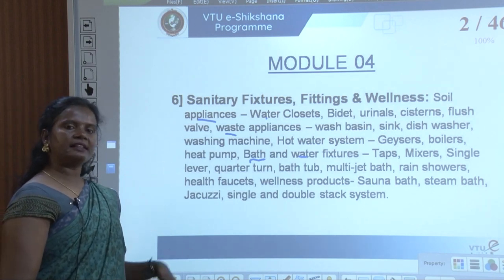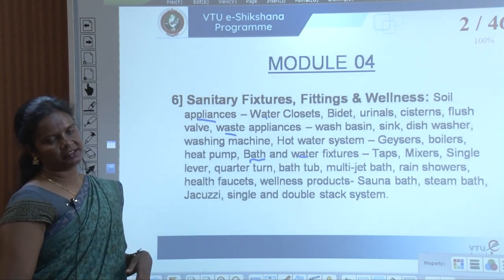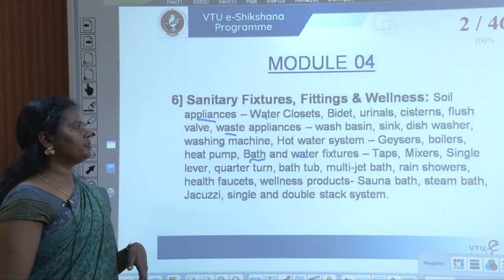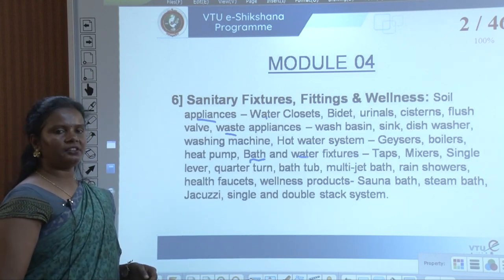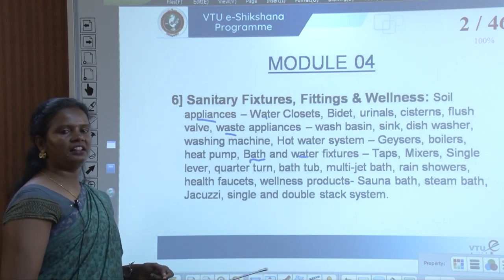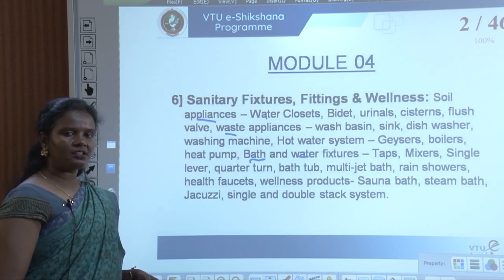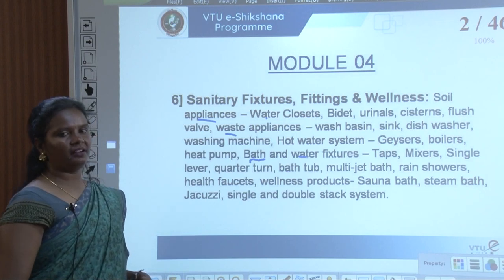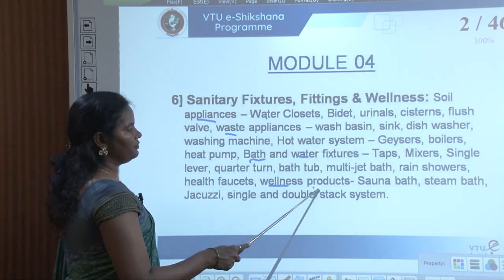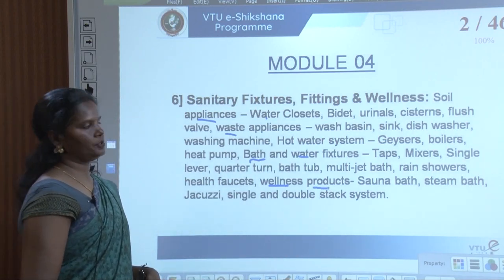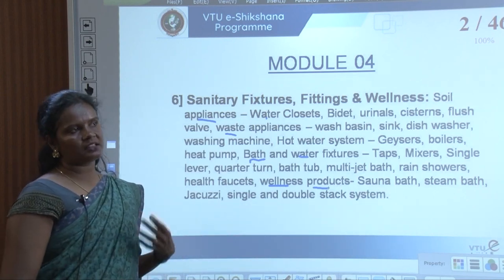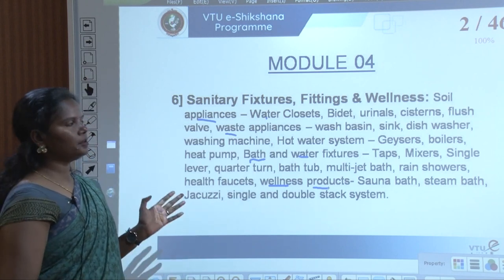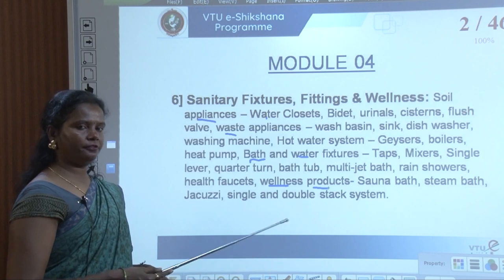We have two categories in module 4: sanitary fixture fittings and wellness products, and the seventh one would be solid waste management and other types of waste management. In bath and water fixtures there are taps, mixers, single lever, quarter turn, bathtub, multi-jet bath, rain showers, health faucets. For wellness products we will look at sauna bath, steam bath, jacuzzi, and single and double stack systems. These are special products not regularly used in daily life.